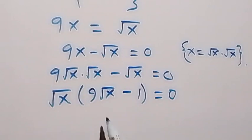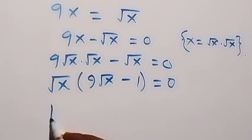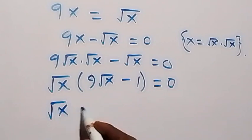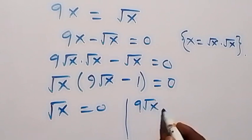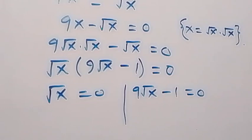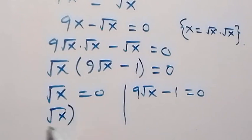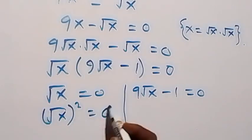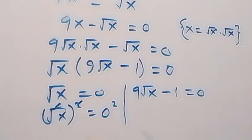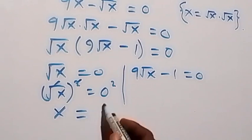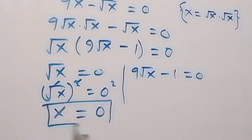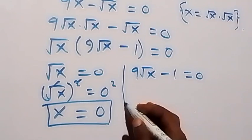Then next, we have either root x equals to 0, or 9 root x minus 1 equals to 0. From root x equals 0, we square both sides: root x squared equals 0 squared, the square cancels the square root, and we have x equals to 0.